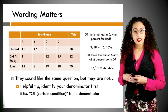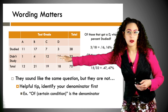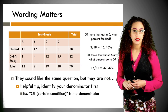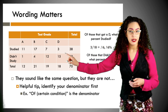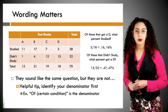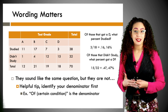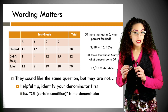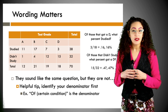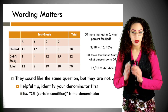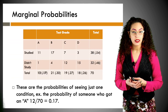Now: of those that did not study, what percent got a D? My denominator is now the 32 people who did not study. Of those, 15 got a D, so 15 divided by 32 gives 0.47 — 47 percent of those who didn't study got a D. A helpful tip: identify your denominator first. Phrases like 'of those that,' 'of a certain condition,' or 'given that' all indicate we're looking at a subgroup — that subgroup is what we are conditioning on.